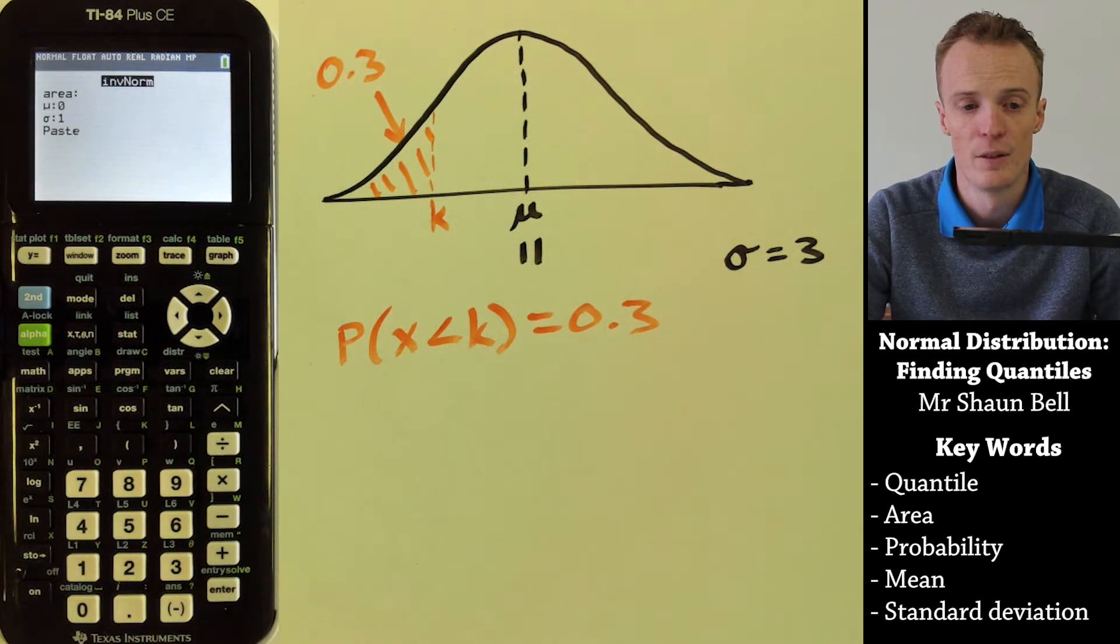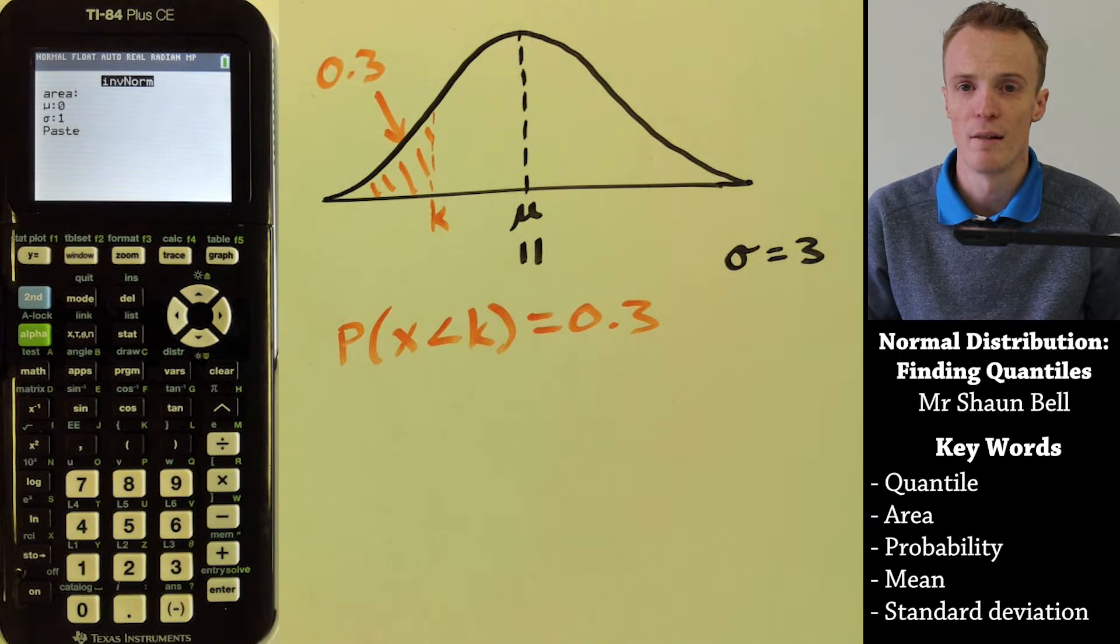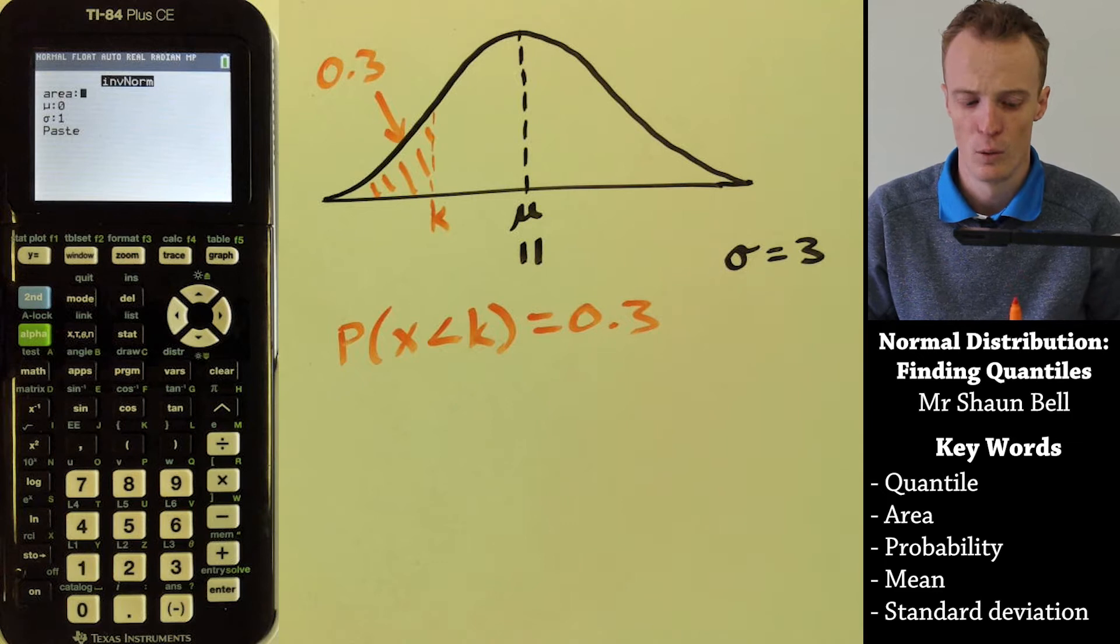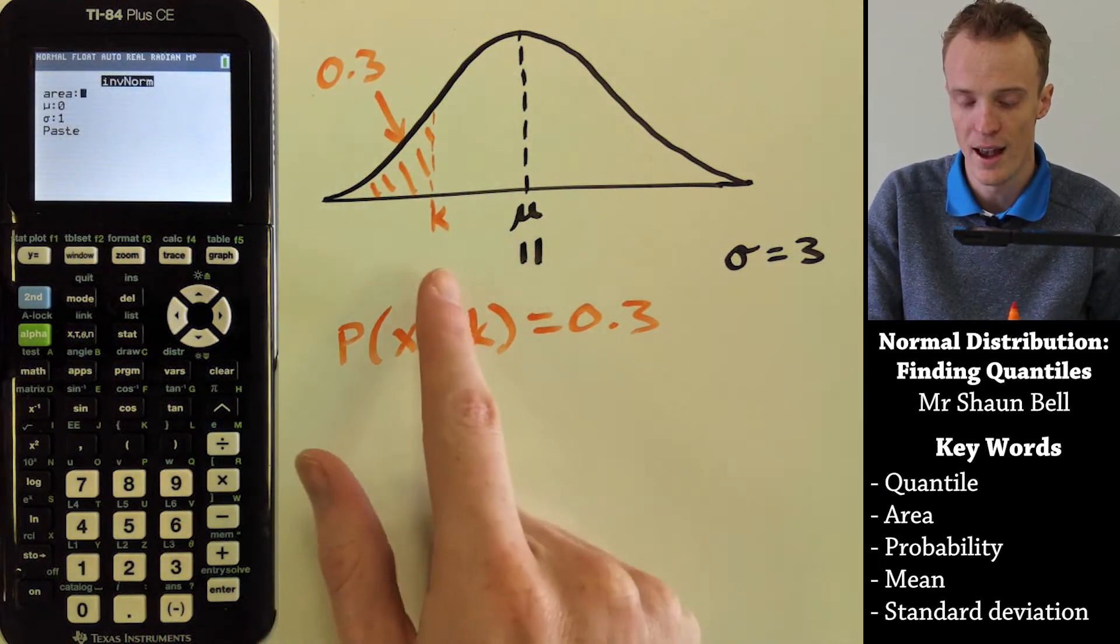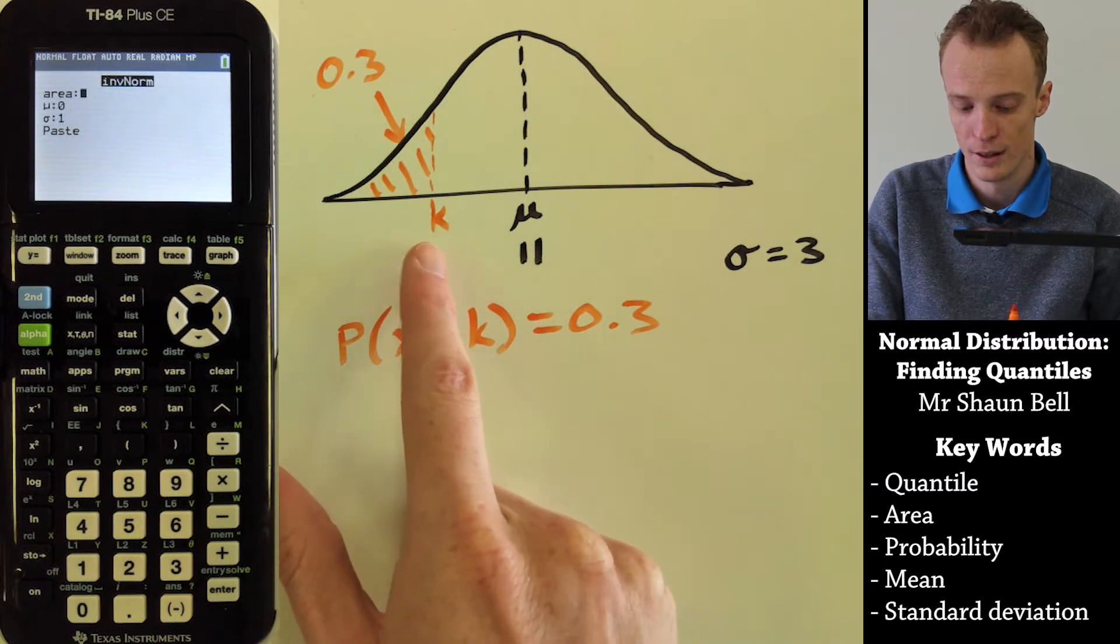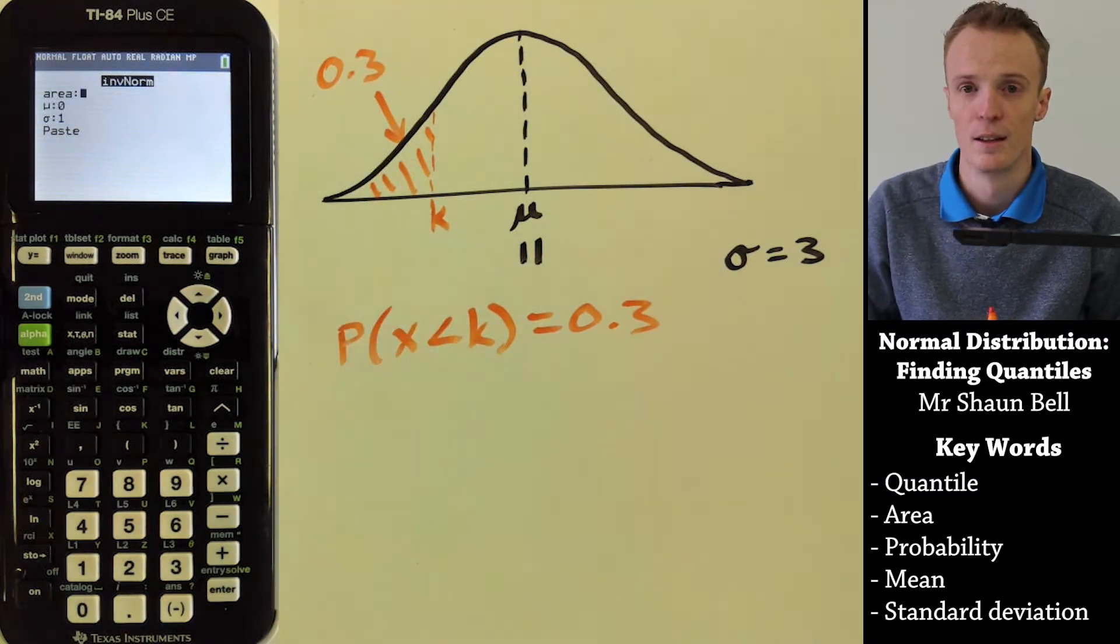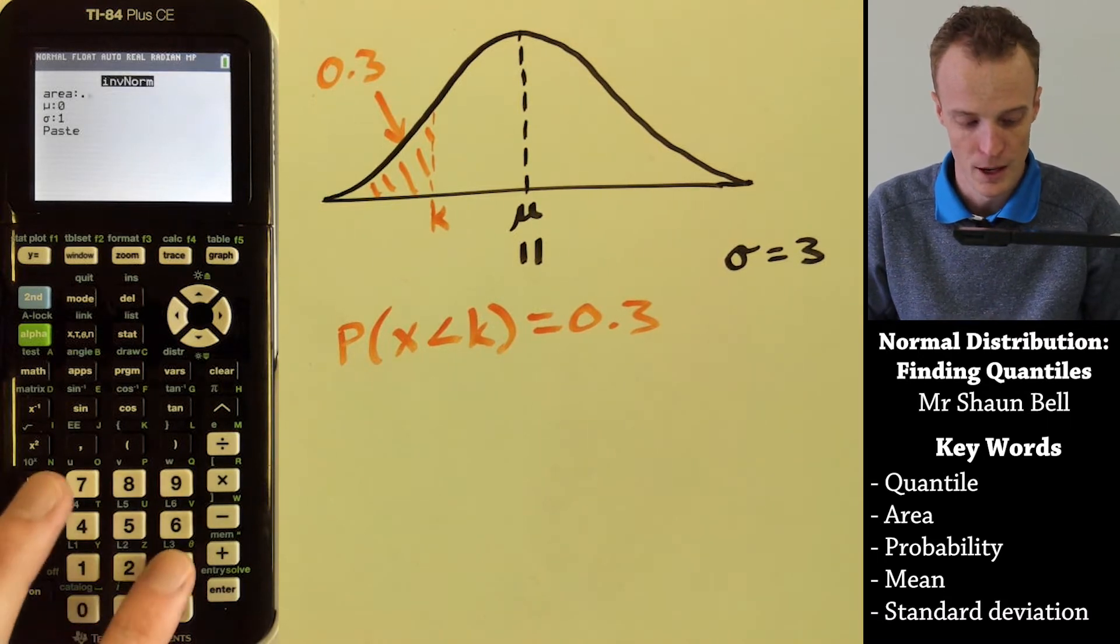If we hit enter on that, it's going to ask what area you need to find. The area that this graphics calculator is always looking for is to the left of our K value. So to the left of our K value is 0.3, so we enter that in.